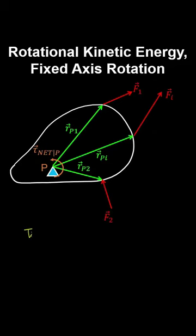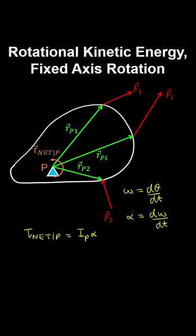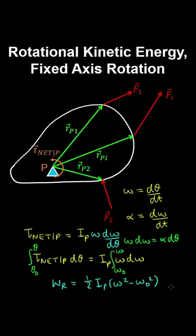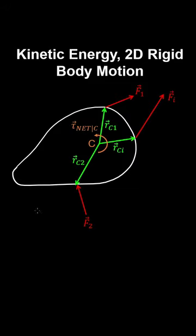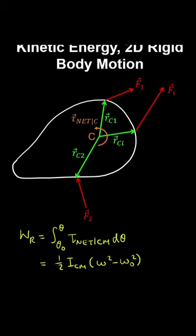Recalling Newton's second law for rotation about a fixed axis and the kinematic relationships for angular velocity and angular acceleration, we can eliminate dt to obtain a relationship between torque, angular velocity, and angle. Substituting for angular acceleration, separating variables, and integrating (with constant moment of inertia) gives the rotational work-energy theorem: the rotational work equals the change in rotational kinetic energy. For a rigid body free to translate and rotate in a plane, the rotational work due to net torque about the centre of mass equals the change in rotational kinetic energy about the centre of mass.